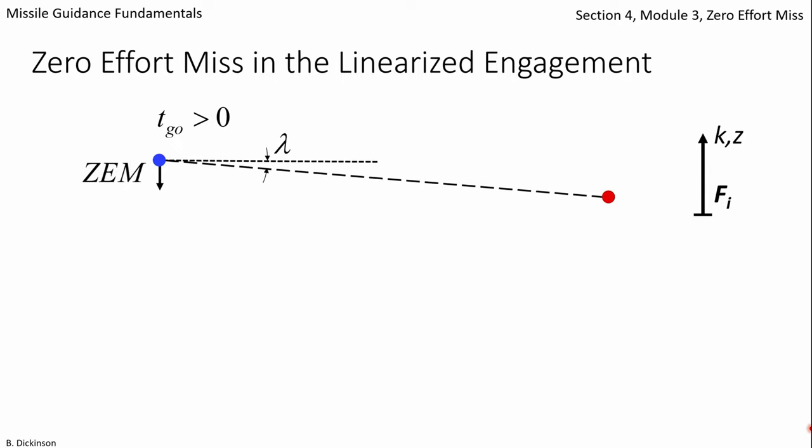Because line of sight angle lambda is assumed small, zero effort miss for the linearized engagement is approximated to be purely in the z direction perpendicular to the line of sight.